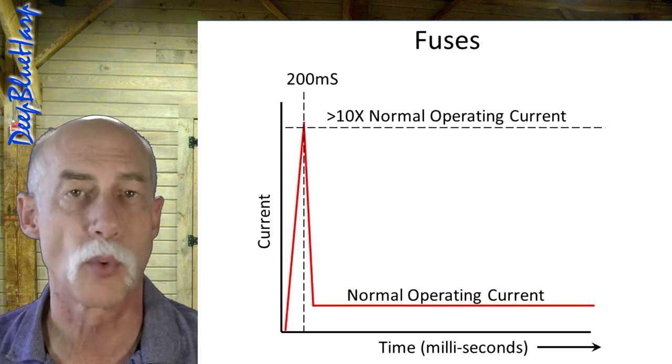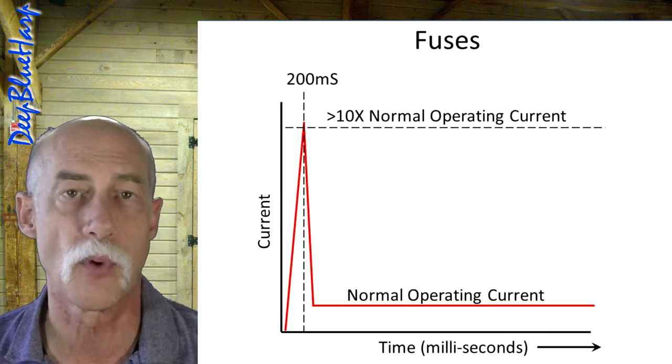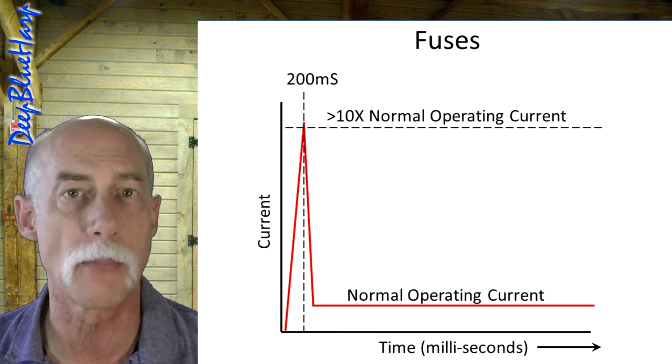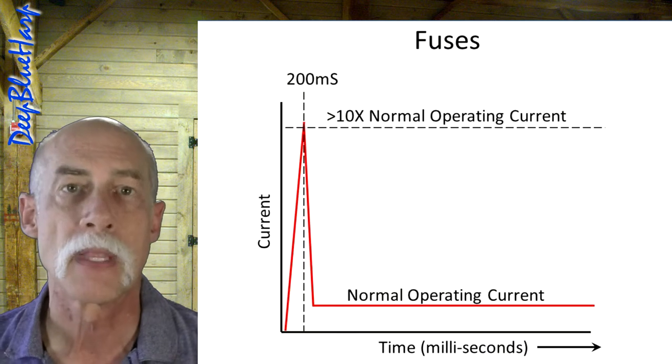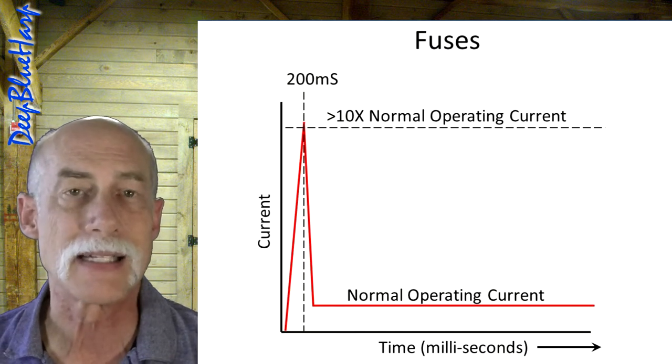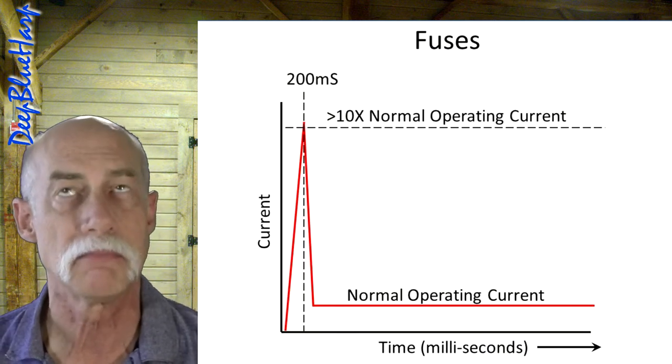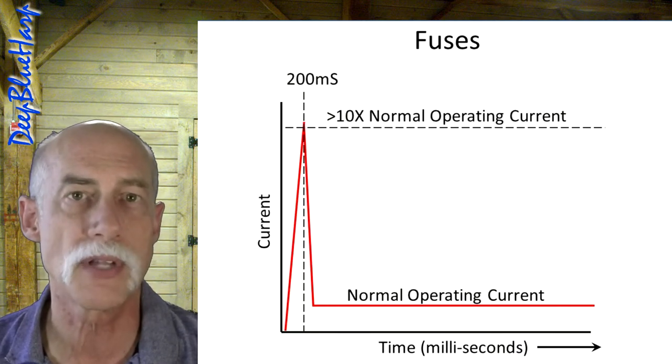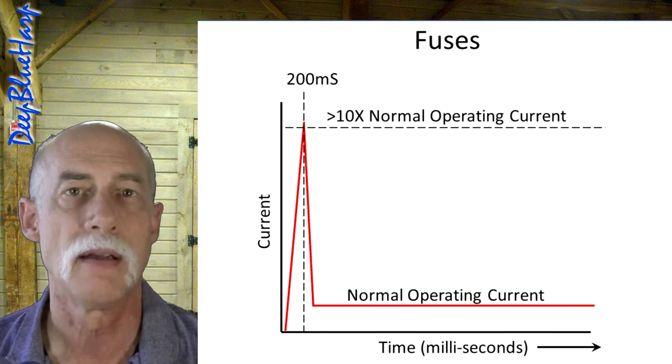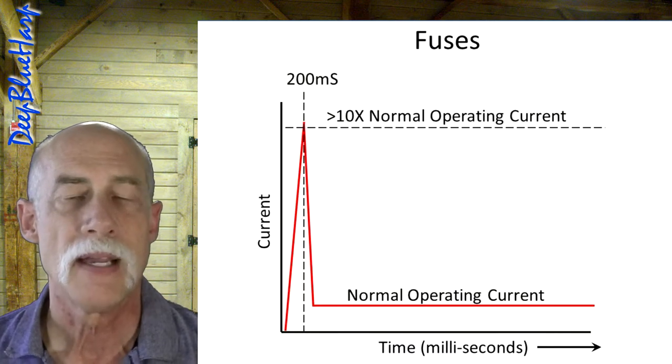In other words, if you're needing one amp for continuous normal operating current, as soon as the unit is switched on, it will draw at least 10 times that, roughly. For a moment, for about 0.2 seconds, it has to withstand 10 amps. That's a lot.